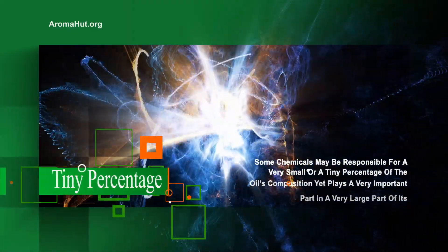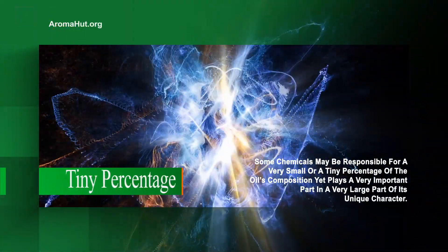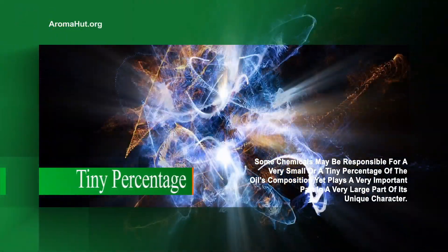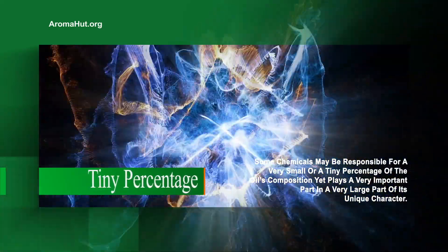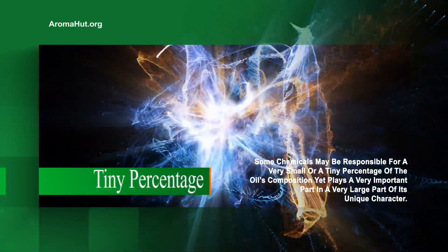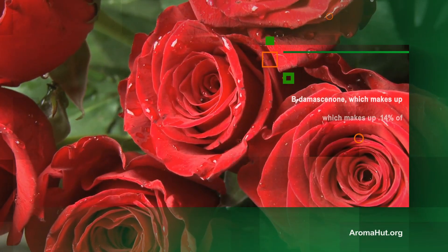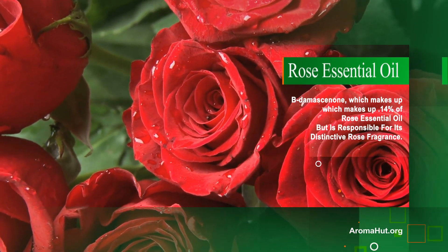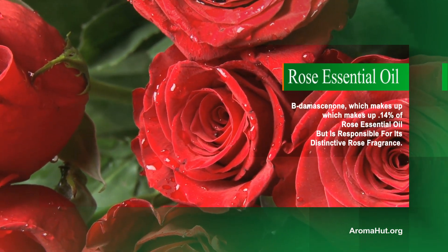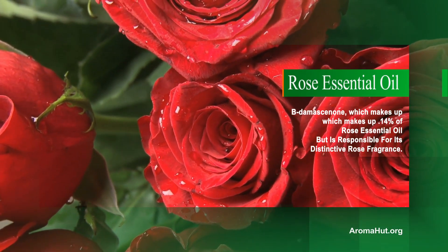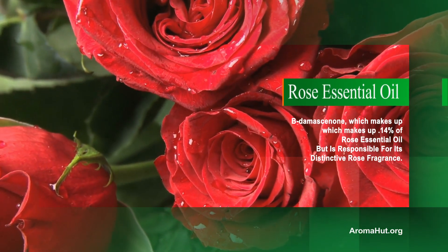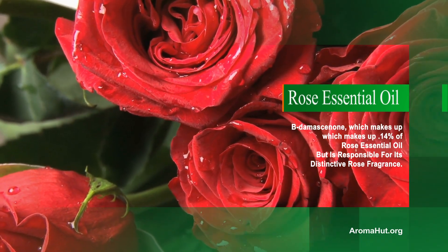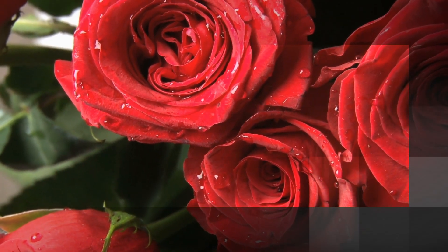While studying the essential components, it's important to consider the oil as a whole. Some chemicals may be responsible for a very small percentage of the oil's composition yet play a very important part in its unique character. A good example of this is beta-damascenone, which makes up only 0.14% of rose essential oil but is responsible for its distinct rose fragrance.